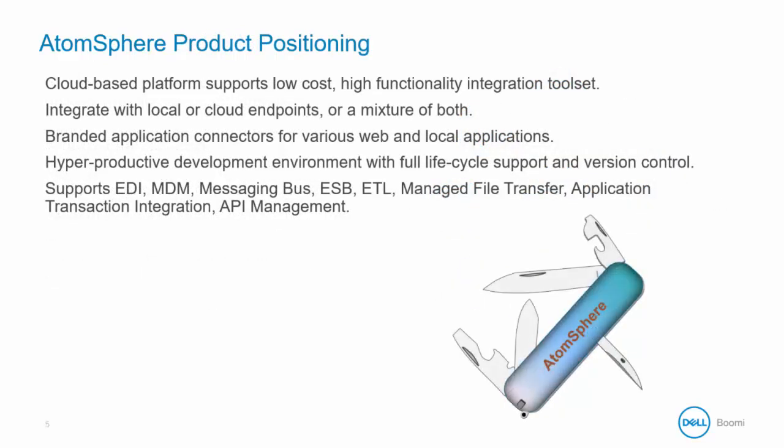AtomSphere is similar to a utility knife in that it has many different uses and features for many different integration scenarios. You can think of it as a cloud-based platform that is a low-cost, high-functioning integration toolset. It allows you to run local or cloud endpoints or a mixture of both. Branded application connectors for various web and local applications already exist to speed development.